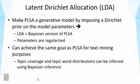So LDA is proposed to improve that and basically to make PLSA a generative model by imposing a Dirichlet prior on the model parameters. Dirichlet is just a special distribution that we can use to specify prior. In this sense, LDA is just a Bayesian version of PLSA, and the parameters are now much more regularized. You will see there are many fewer parameters.